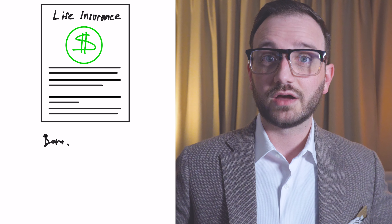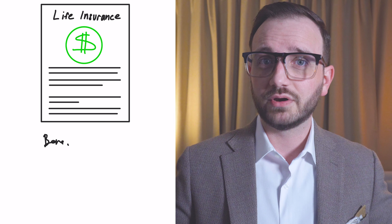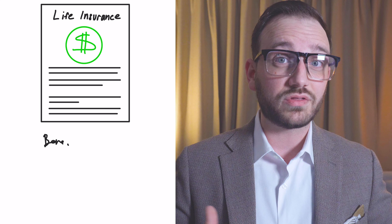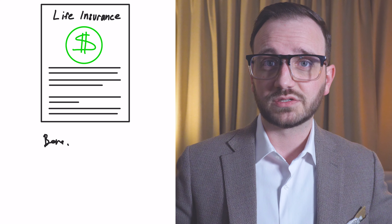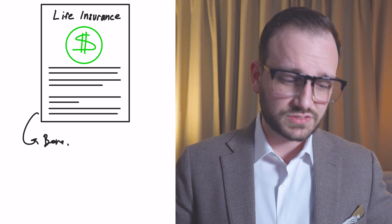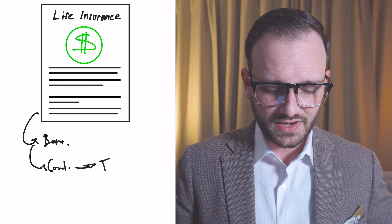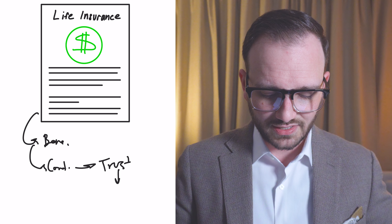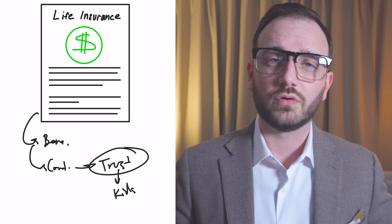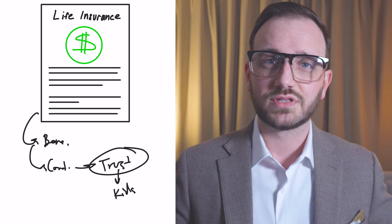Just like your retirement accounts, you can name your trust as a contingent beneficiary, or as a primary if you're unmarried — so that the kids are not receiving a giant check that they or their future spouses could be irresponsible with. If you pass, the benefit goes to your spouse. If your spouse passes with you, it goes to the contingent beneficiary, and if that's the trust, your kids can be beneficiaries of that trust while you retain all the control through how you designed it.